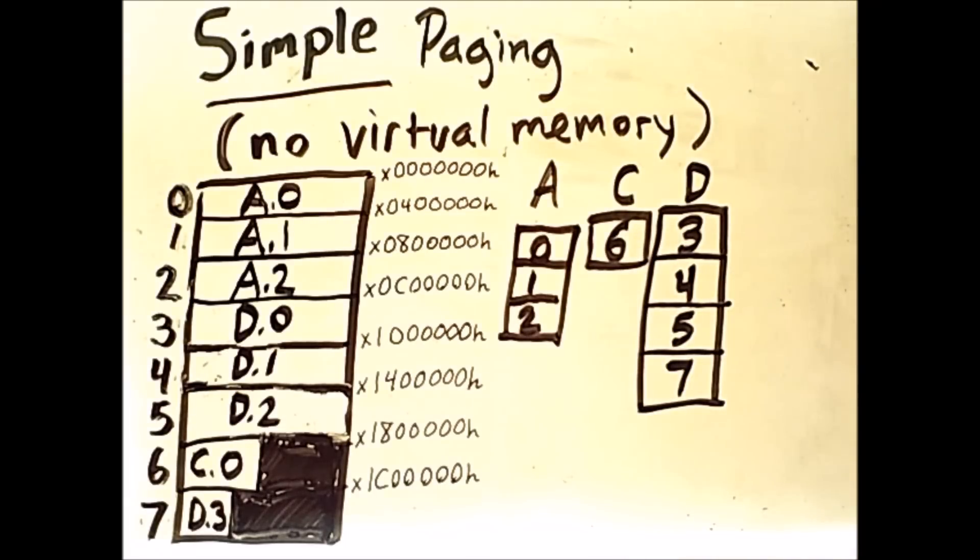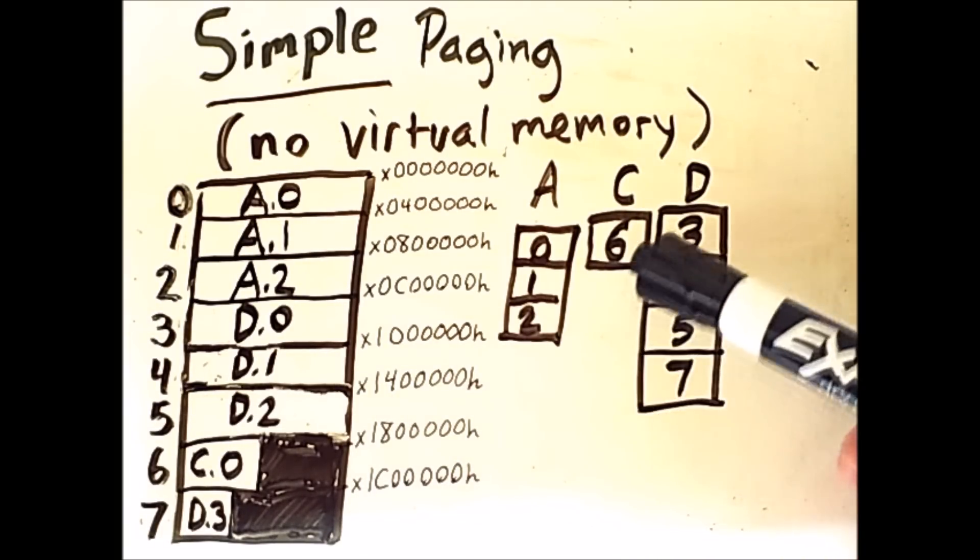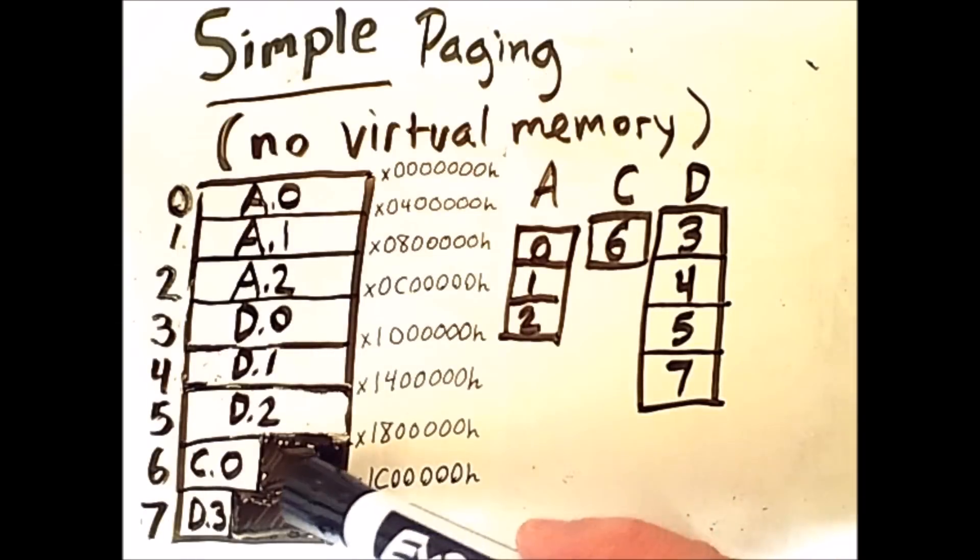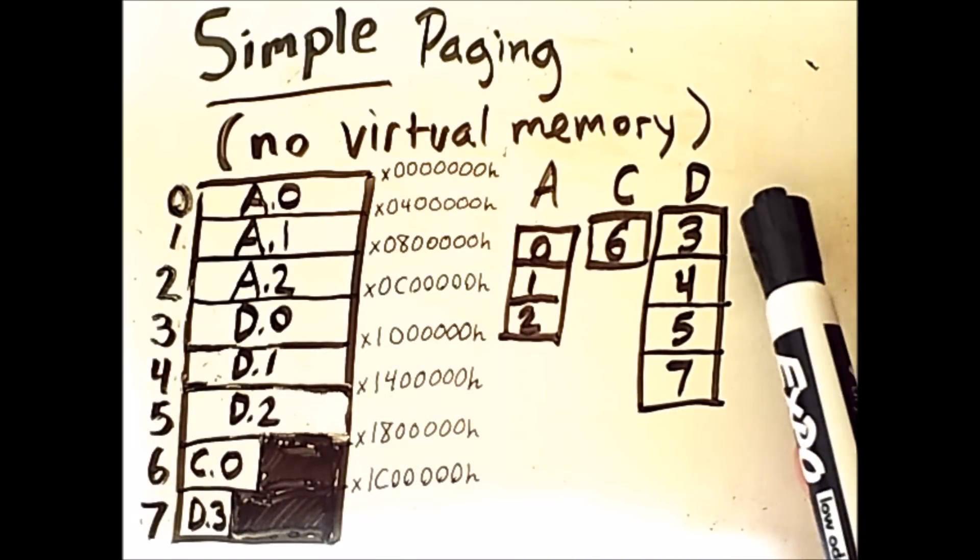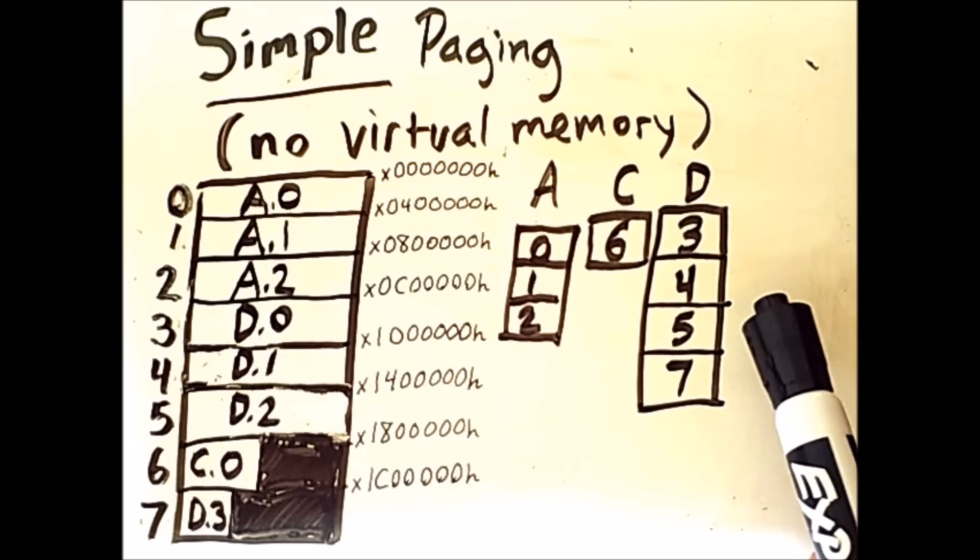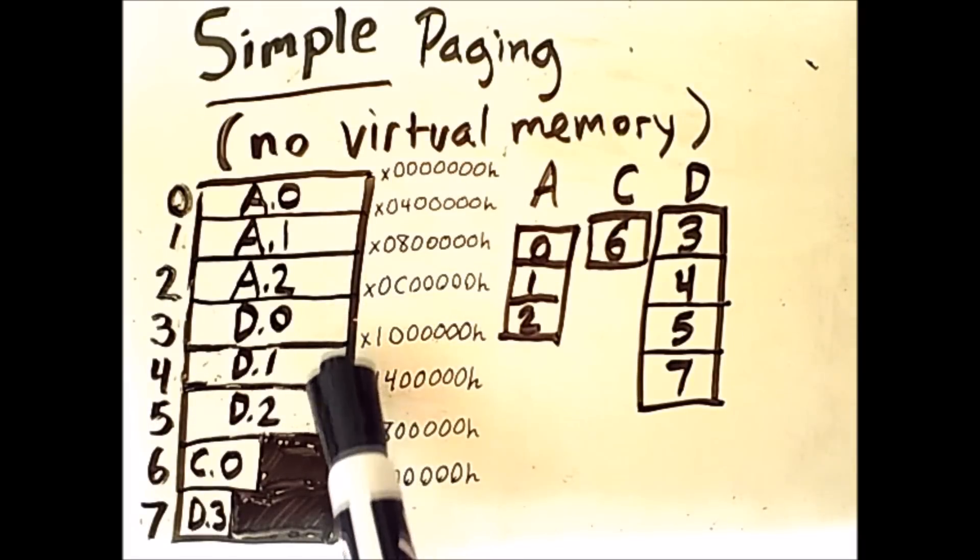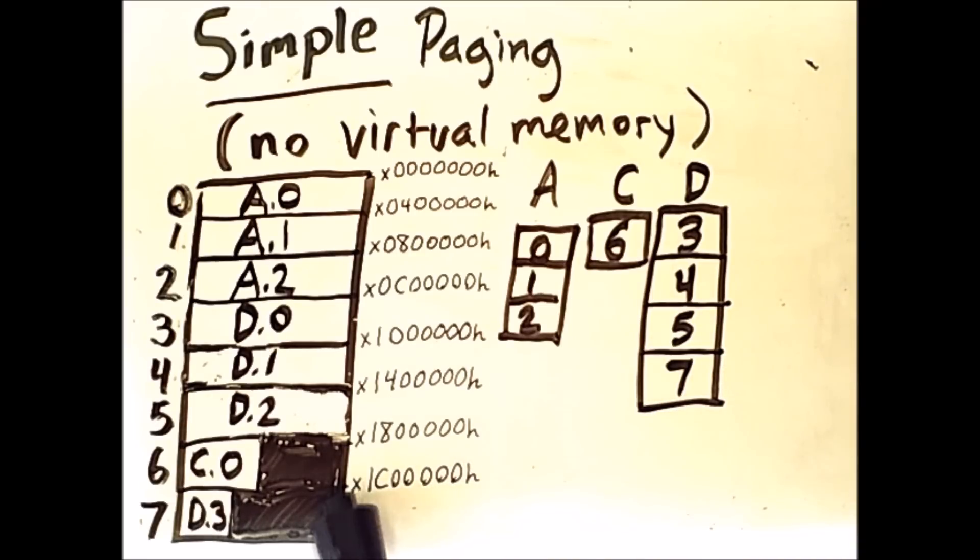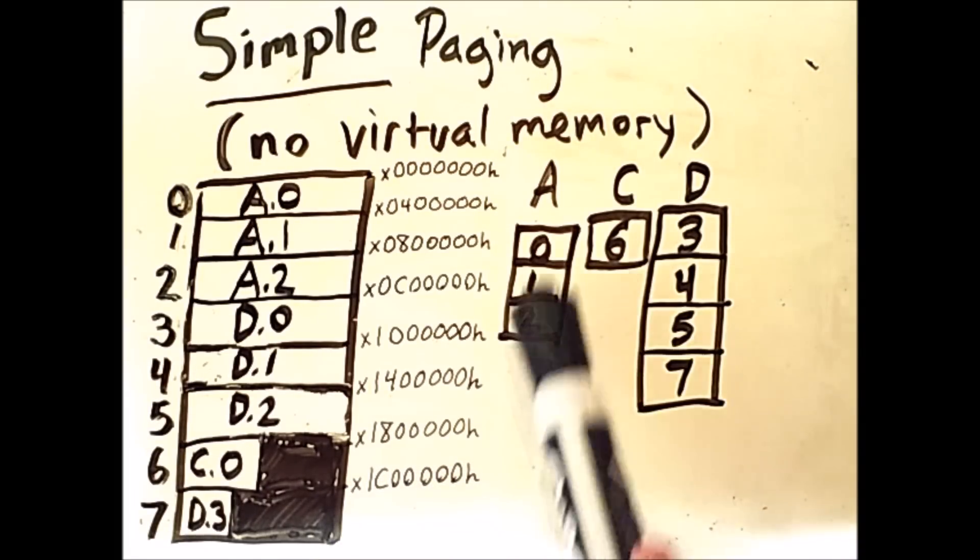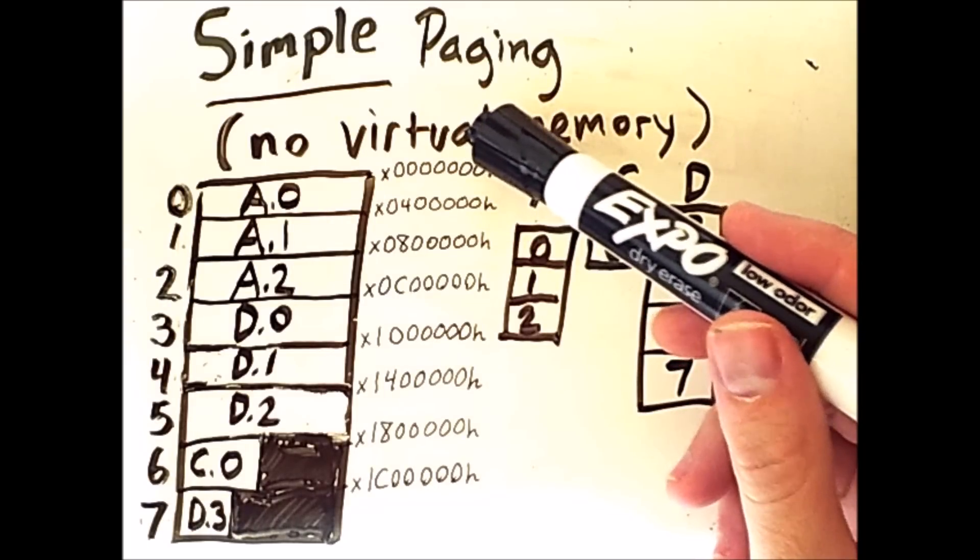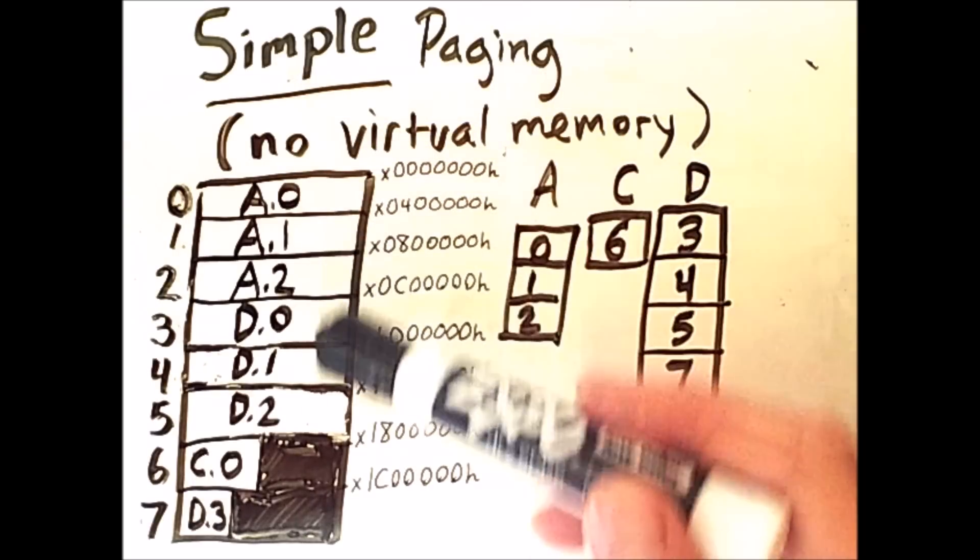Now, the other two processes are more interesting. C consists of a single page. Page 0 of process C is stored in frame 6, shown here. And for D, we have pages 0, 1, and 2 stored sequentially in frames 3, 4, and 5, but then page 3 is stored in frame 7. So, as I said, just recall that this information is technically also tracked in memory as well. And this is actually why I've drawn memory addresses here on the side of the memory depiction.